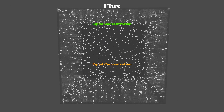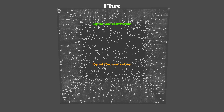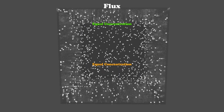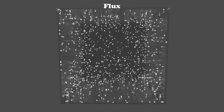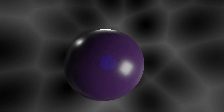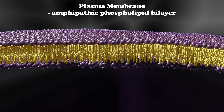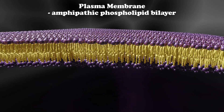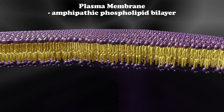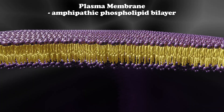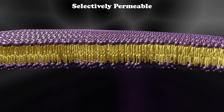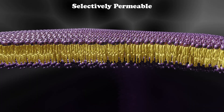Moving over to our plasma membrane — which is the barrier of the cell, the amphipathic phospholipid bilayer — one thing we didn't talk about in the last video was the selectively permeable feature of the membrane. This means that it can choose what can pass through, with a few exceptions.